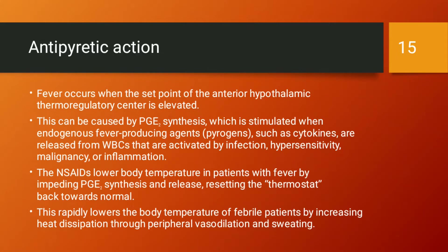For antipyretic action, fever occurs when the set point of the anterior hypothalamic thermoregulatory center is elevated. The hypothalamus acts as a thermostat, normally set at 37°C, but in fever it is set at 40°C or higher. This resetting is caused by PGE2, which is stimulated when endogenous pyrogens such as cytokines are released from WBCs activated by infection, hypersensitivity, malignancy, or inflammation.